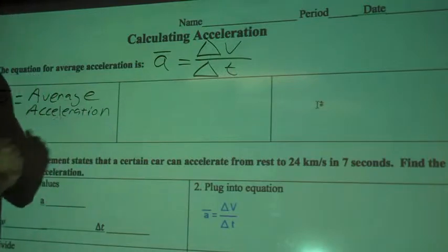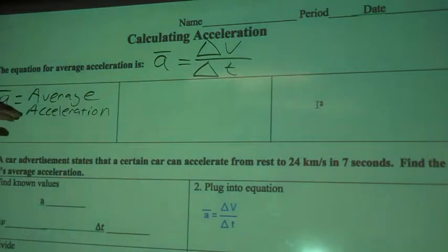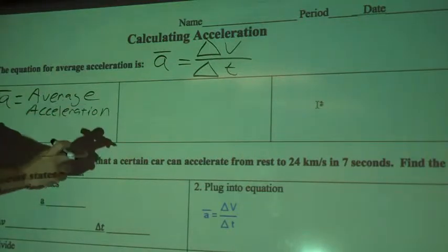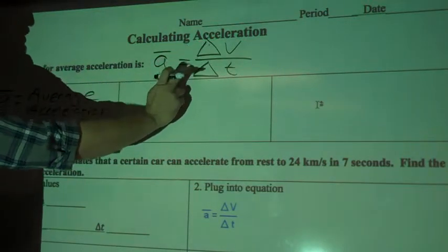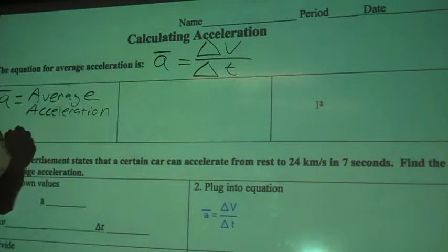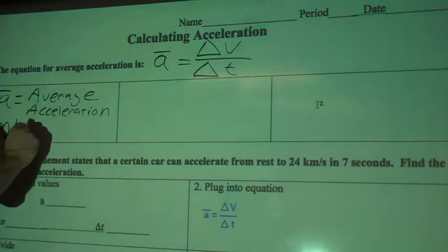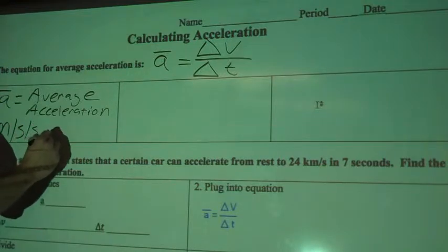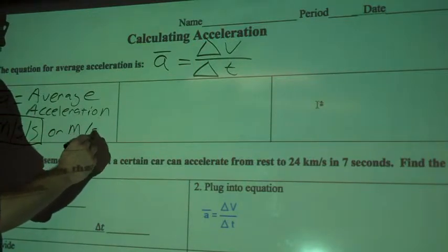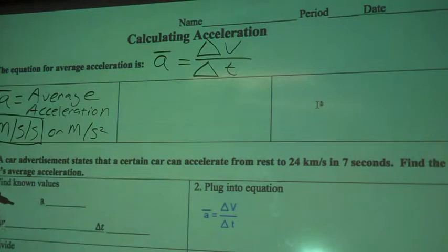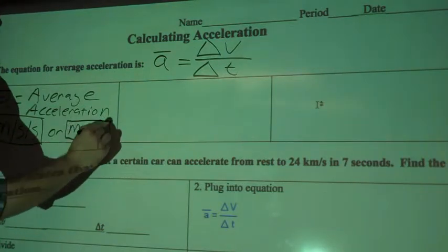And average acceleration is going to be measured in, because we're talking about acceleration, so something going a certain speed is increasing or decreasing, it's changing their velocity over time. It's going to be measured in either meters per second per second, or we'll write meters per second squared.